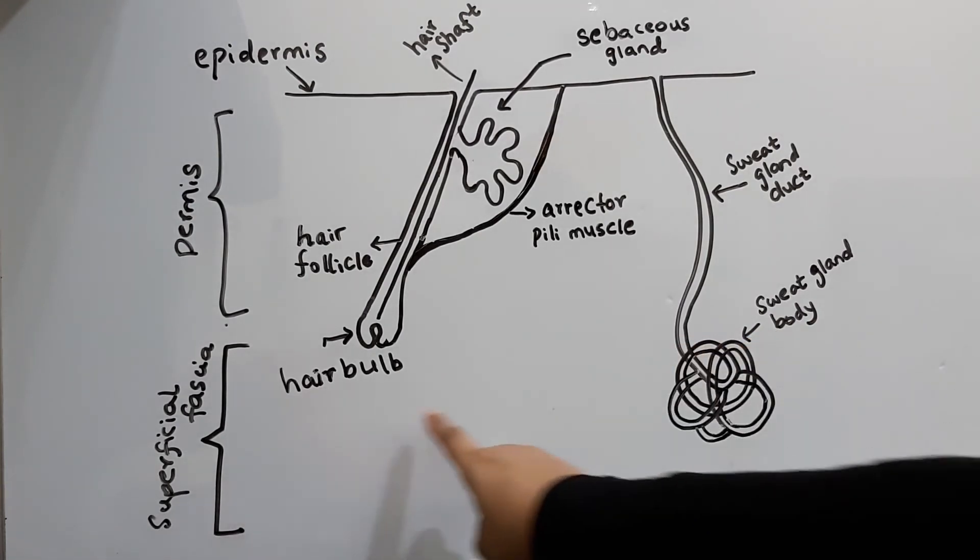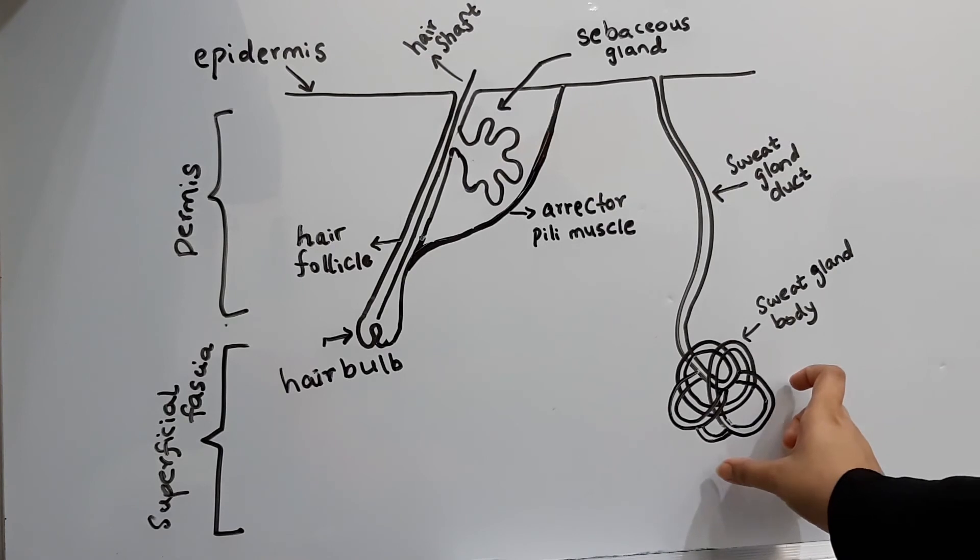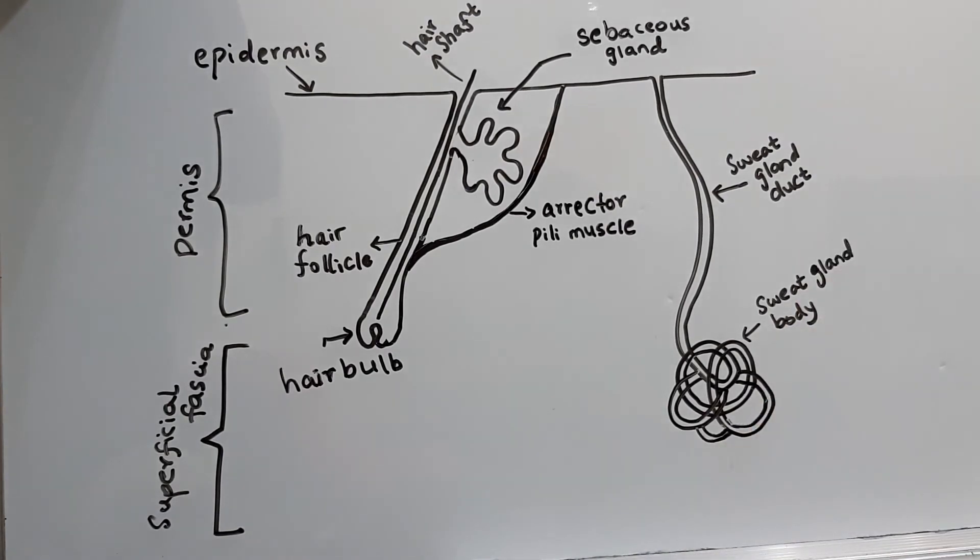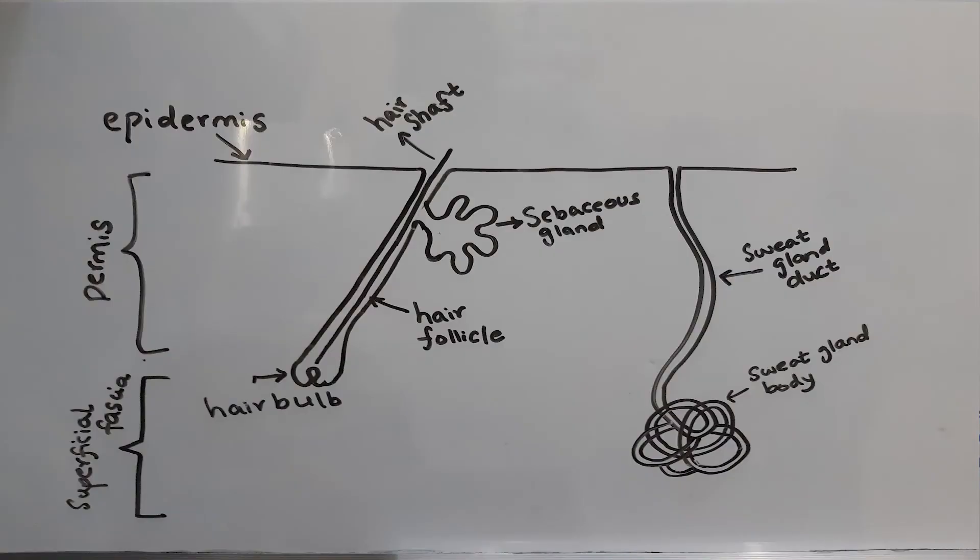Lastly, sebaceous glands are not present on the palmar and plantar surfaces of the hand and feet, while sweat glands are not present on the red margins of the lips, the nail beds, the glans penis, and clitoris.